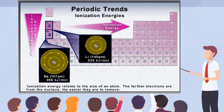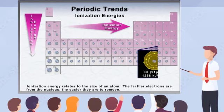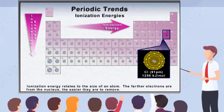Similarly, from left to right across a period, the size of atoms decreases, and the decreased size allows electrons to be held more closely to the nucleus. This causes an increase in ionization energy as you move across a period, since the electrons are more difficult to remove. So far, you have learned the effect of removing a single electron from an atom. In the next scene, you will learn about successive ionization energies, or the amount of energy required to remove more than one electron from an atom.